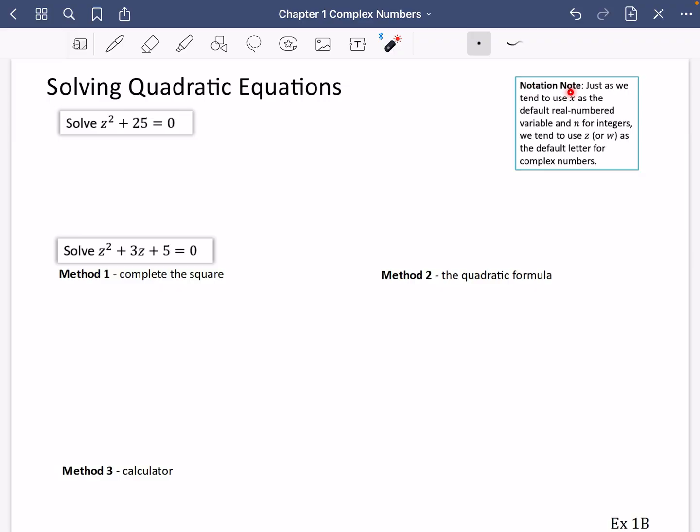So I just wanted to talk about some of the stuff to do with notation. Just as we tend to use x as the default real numbered variable, so we use x for when we just think it's like a regular kind of number, and we tend to use n for when it's an integer or a whole number. What we do is we use the letter z or sometimes w as the default letter for complex numbers. So this equation that we've got here is likely to have some complex solutions because of the fact that we've used the letter z.